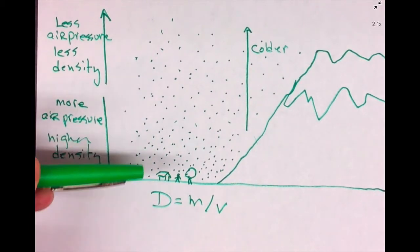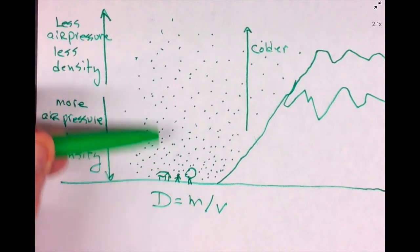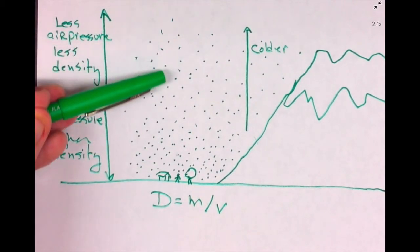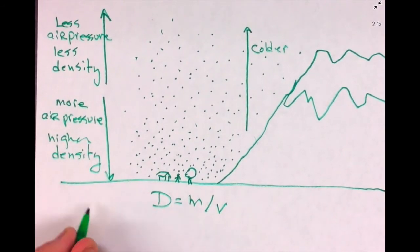And how much weight is that? Here's how much it is. Write this down—guaranteed test question. The air pressure here at sea level is 14.7 pounds per square inch.